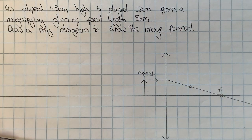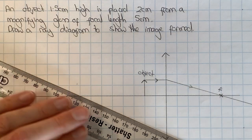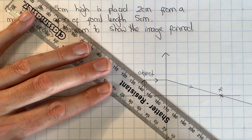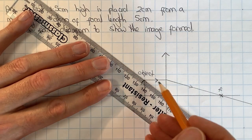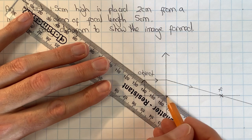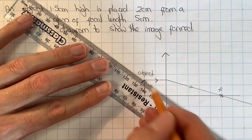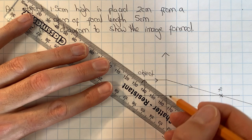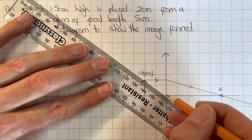My second special ray is the one that goes through the center of the lens. The ray going through the very center, starting from the top of the object through the very center of the lens, is not refracted at all, so it just keeps going in a straight line.